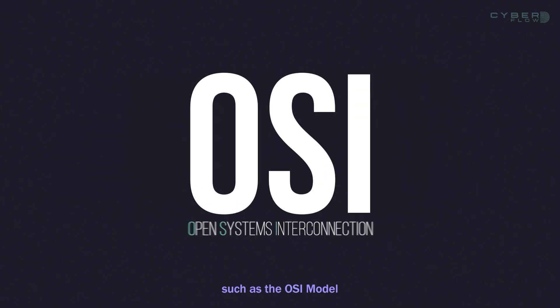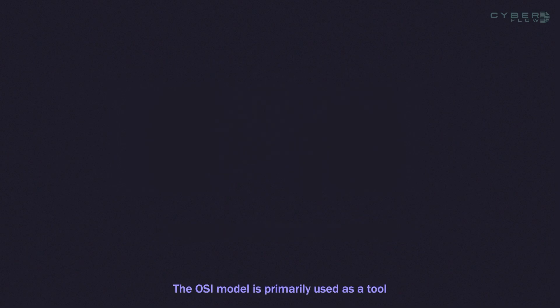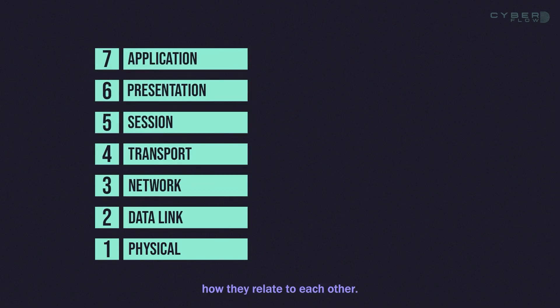To effectively understand network communication, utilizing layered models such as the OSI model can provide a framework for representing and explaining networking concepts and technologies. The OSI model is primarily used as a tool for explaining networking concepts and troubleshooting. To fully grasp these concepts, it is important to be familiar with the layers of the OSI model and understand how they relate to each other. Let's take a look at each layer and its function, starting off with the top layer and moving to the bottom.